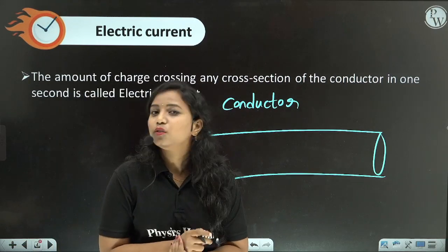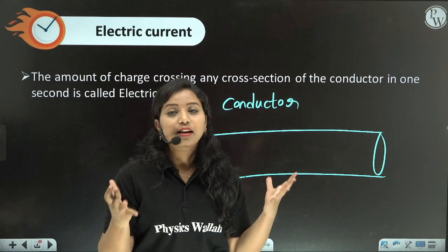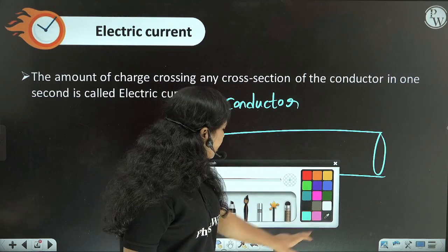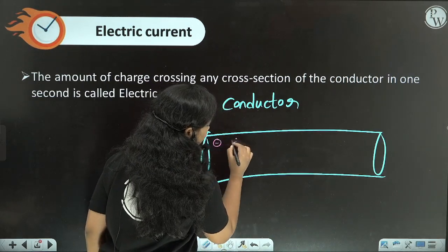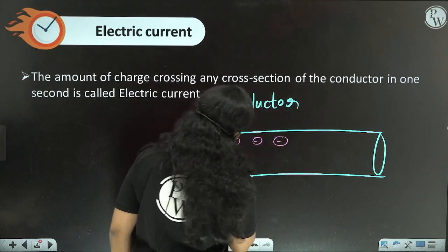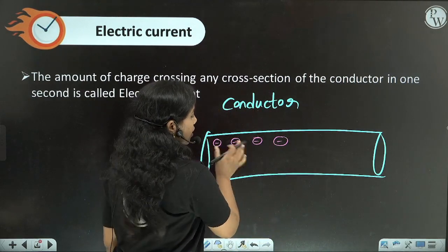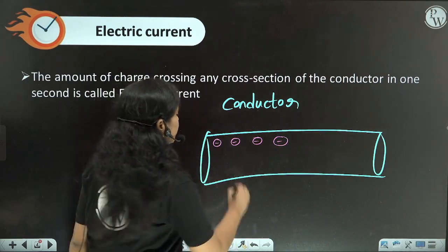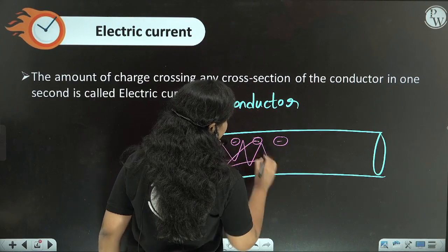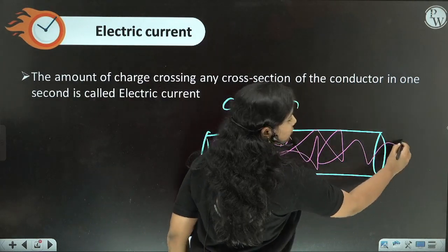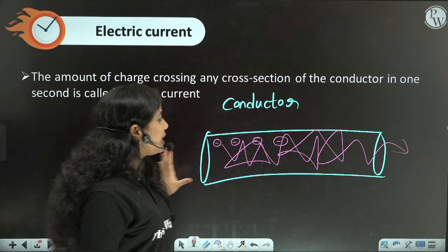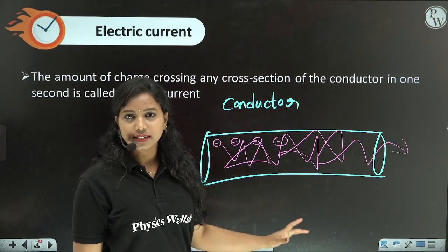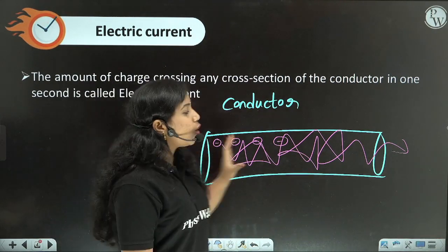Conductors have a number of free charges — these are electrons. These free charges exist in the conductor. In normal conditions, when not connected to anything, the motion of these charges is random — they move randomly in all directions.